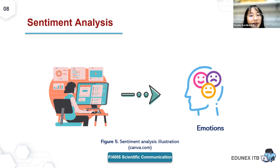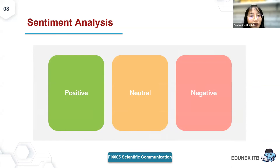Sentiment analysis gives machines and computer software the ability to understand the emotions of users. Emotions are typically categorized as positive, neutral, and negative, with corresponding scores of plus one, zero, and negative one respectively. The keywords of each sentence are categorized into one of the three categories, and the summation of the final scores determines whether the sentence is overall positive, neutral, or negative.